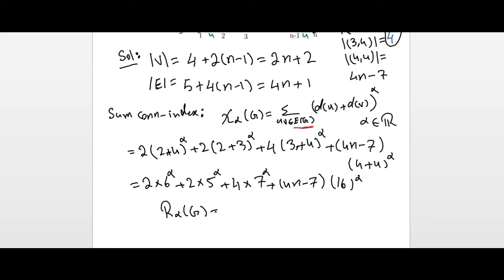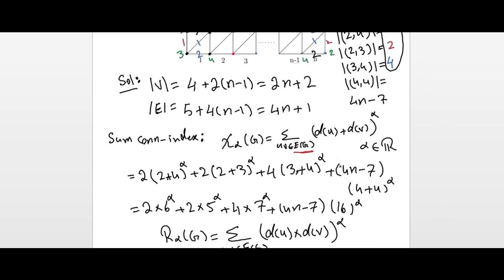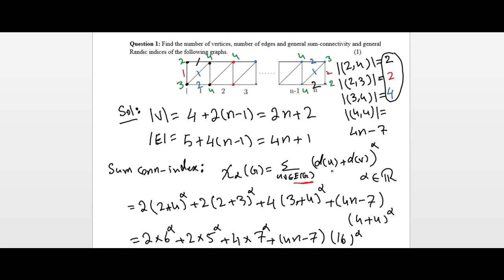Similarly, we can find the general Randić index. The general Randić index of a graph G is defined as the sum over all edges uv in the edge set of (degree of u multiplied by degree of v) raised to the power alpha, where alpha is any arbitrary real number. The remaining steps follow the same process as above. In summary, in this video we found the number of vertices, number of edges, and topological indices including the sum connectivity and Randić index for this graph structure.